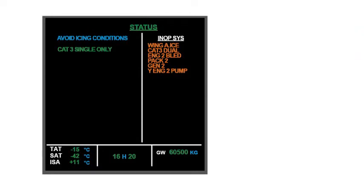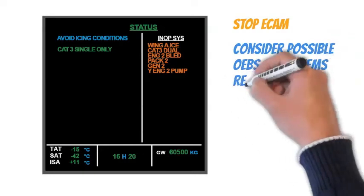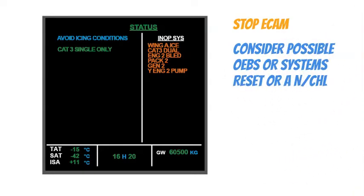After all secondary fault pages are cleared, the status page appears. The PF order stop ECAM action. Before analyzing ECAM, crew always consider possible OEBs, systems reset or a normal checklist.